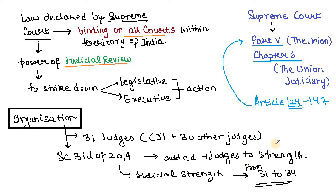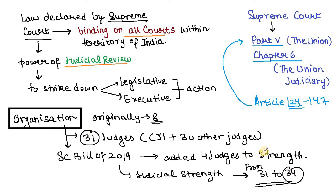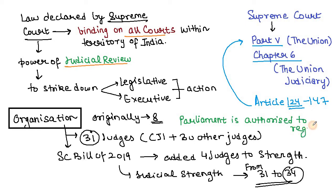Originally, the strength of the Supreme Court was fixed at 8 only. Then it became 31, and now with the 2019 bill it has become 34. The Parliament is authorized to regulate the strength of the Supreme Court.